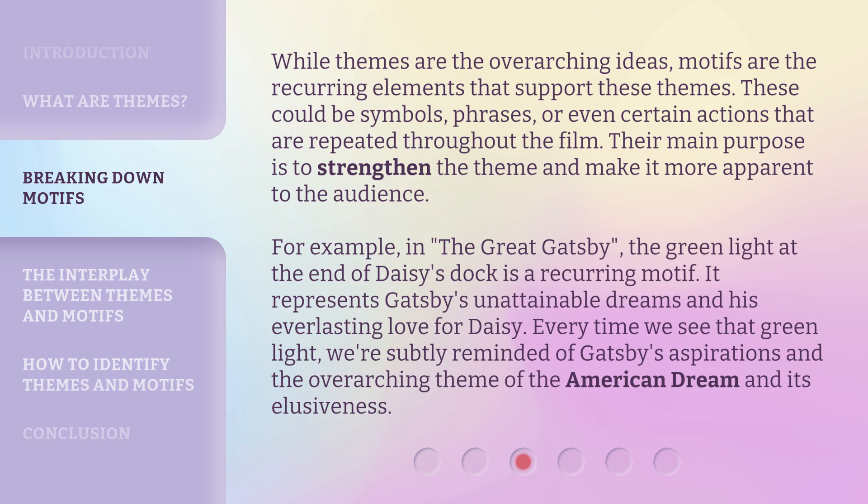While themes are the overarching ideas, motifs are the recurring elements that support these themes. These could be symbols, phrases, or even certain actions that are repeated throughout the film. Their main purpose is to strengthen the theme and make it more apparent to the audience. For example, in The Great Gatsby, the green light at the end of Daisy's dock is a recurring motif. It represents Gatsby's unattainable dreams and his everlasting love for Daisy. Every time we see that green light, we're subtly reminded of Gatsby's aspirations and the overarching theme of the American dream and its elusiveness.